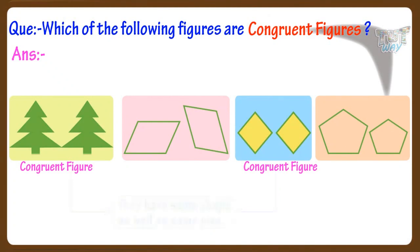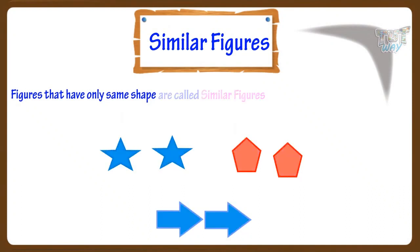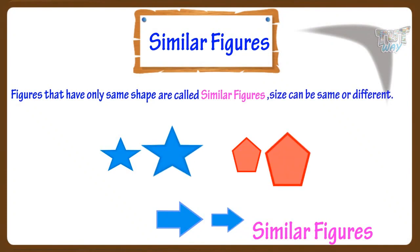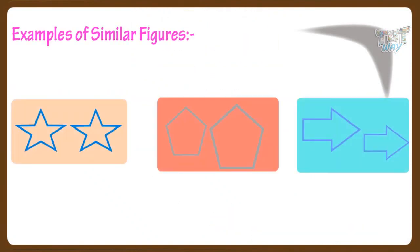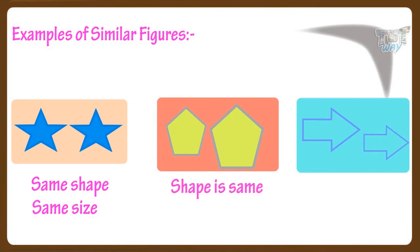Now let's learn what are similar figures. Figures that have the same shape are called similar figures — size can be the same or different, but shape must be the same. These are a few examples of similar figures. In case of these stars, they have the same shape so they are similar figures, and their size is also the same. In case of these two pentagons, shape is the same so they are similar, but the size is different.